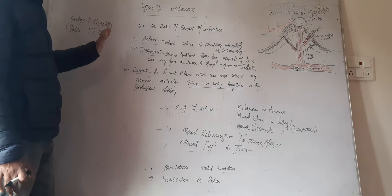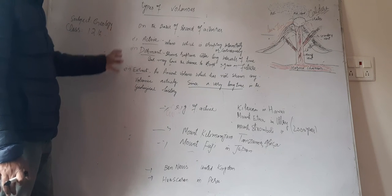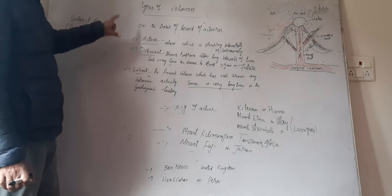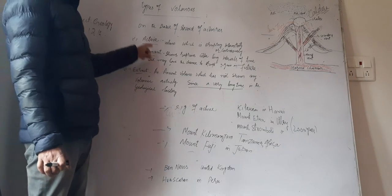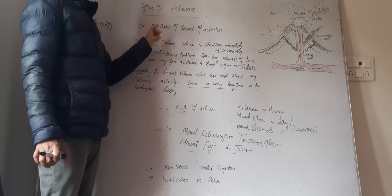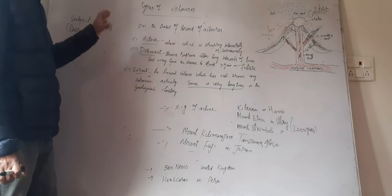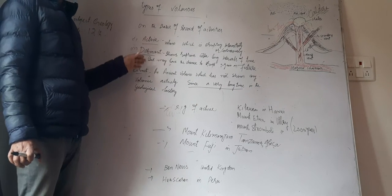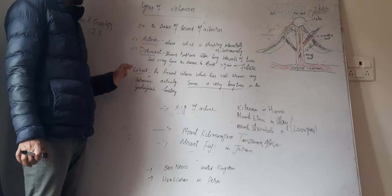So these are the three simple types of volcanoes which have been recorded on the basis of their activities. These activities of these volcanoes get monitored every time, every year. So on the basis of these activities, they have been categorized into three: active, dormant, and extinct.